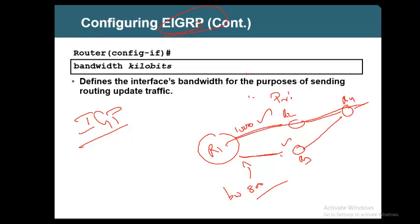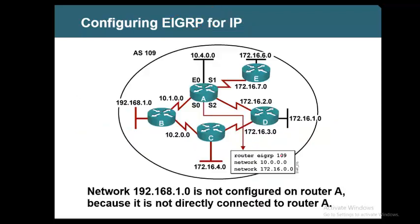If the advertised distance via R3 is not less than the successor value, then it won't be seen in the topology table. That is why those fundamentals are very important. Do you remember those six points? Yes, sir. Wonderful. So may I ask you a question from the previous chapter? Are you ready? Yes, sir. What does successor value mean?